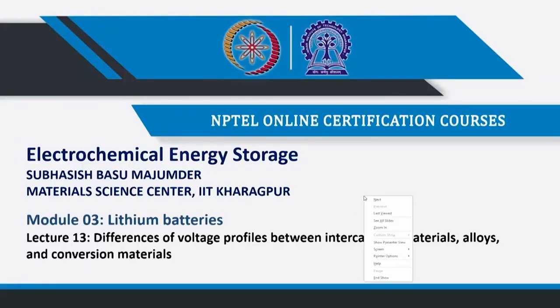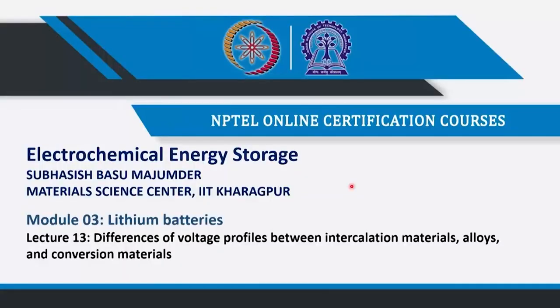Welcome to my course Electrochemical Storage. This is module number 3 on lithium batteries, lecture 13. Here I will show what is the genesis of various types of voltage profiles between different types of electrode material. So far we have talked about intercalation material, alloy, and conversion material. Do you get a similar type of voltage versus lithium composition pattern, or do you get different types, and what is the genesis of that?